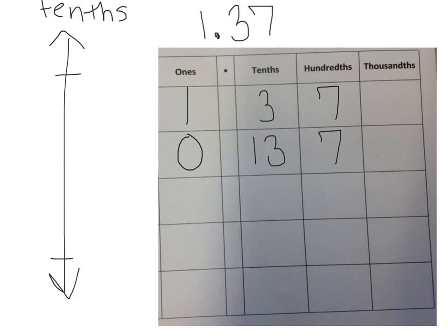Now, just in case, let me decompose it one more time. If I had zero ones, I know that 13 tenths is 130 hundredths plus the 7 I already have, 137 hundredths. And don't forget that zero in the tenths place because you don't have any tenths anymore.